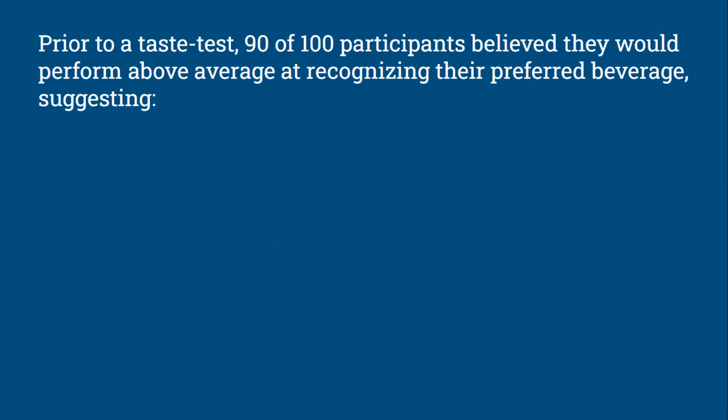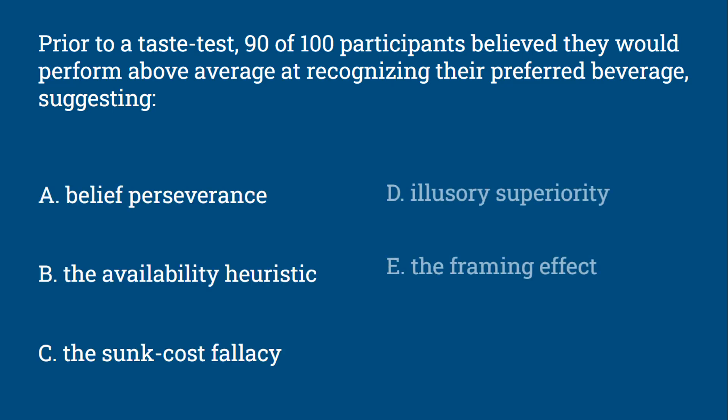Prior to a taste test, 90 of 100 participants believed they would perform above average at recognizing their preferred beverage, suggesting: belief perseverance, the availability heuristic, the sunk cost fallacy, illusory superiority, or the framing effect.